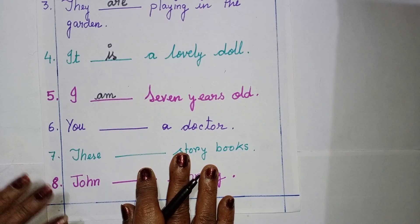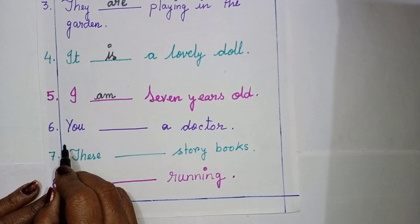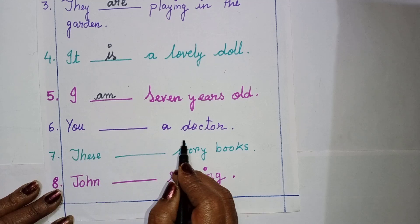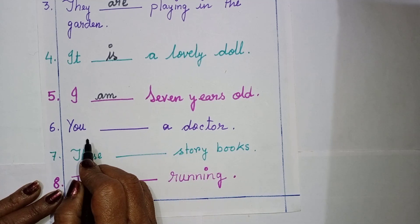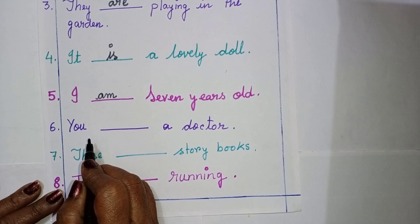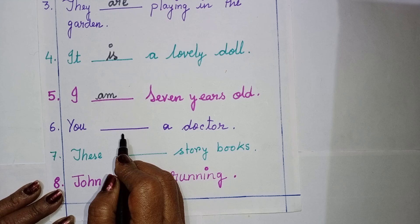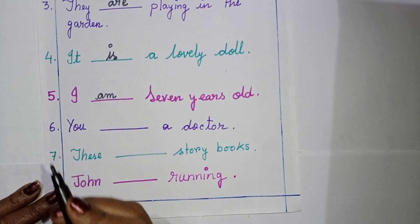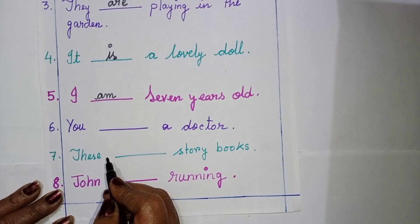Number six: you dash a doctor. Remember, children — are goes with you. When I am talking with you, I say how are you, what are you doing, where are you going. So here: you are a doctor.